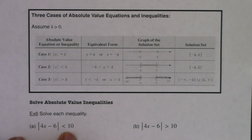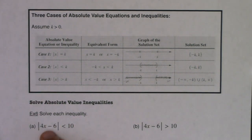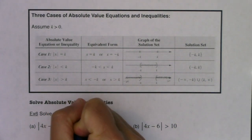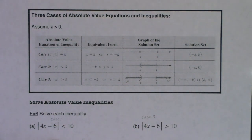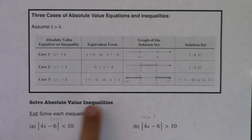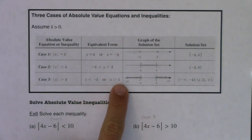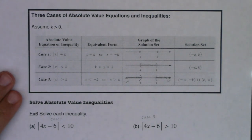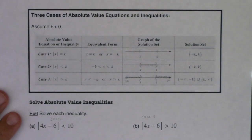Now we'll start example six. I ask: does this feel like case one, case two, or case three? I have my absolute value expression isolated in both parts — one has a less than symbol (case two) and one has a greater than symbol (case three). For case two I'll wedge 4x minus 6 between negative 10 and 10. For case three I'll write two separate inequalities: 4x minus 6 greater than 10, or 4x minus 6 less than negative 10.